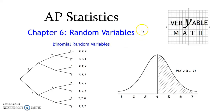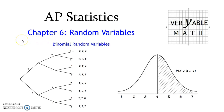Hello, students. This video is designed to accompany Chapter 6, Random Variables, specifically the section on binomial random variables. I'm going to be talking about how to look at a binomial random variable situation and see whether it is, in fact, binomial. I'm going to be talking about how to interpret the probabilities associated and then calculate some of those probabilities in question. So here we go.